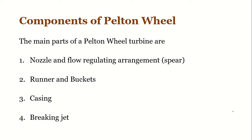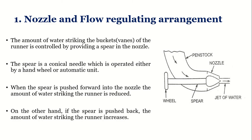The main components of the Pelton wheel turbine are four: first, nozzle and flow regulating arrangement; second, runner and buckets; third, casing; and fourth, braking jet.